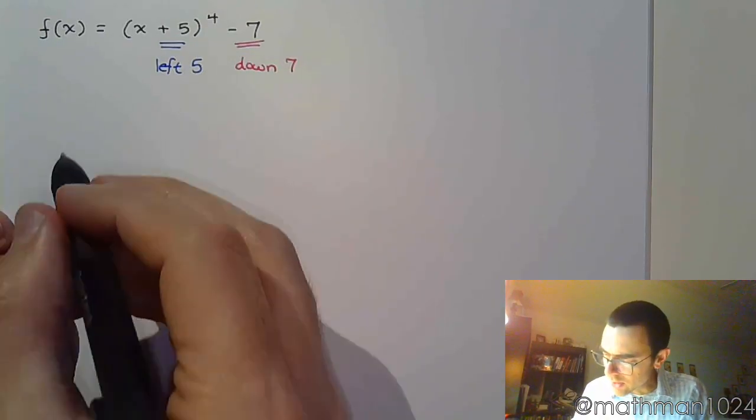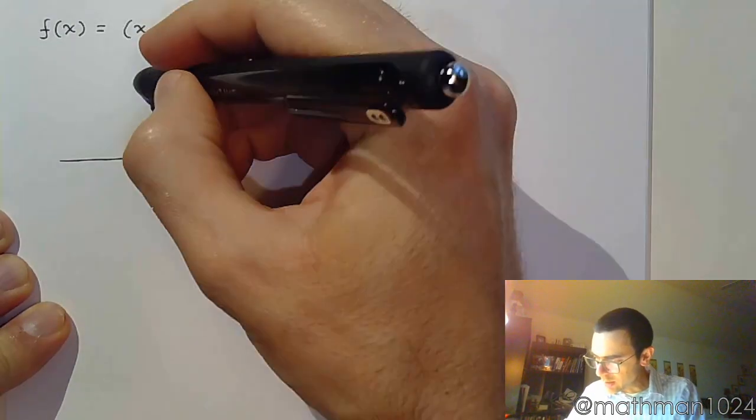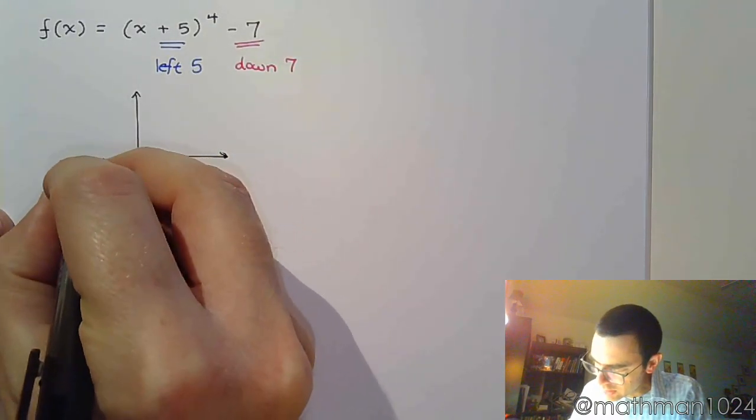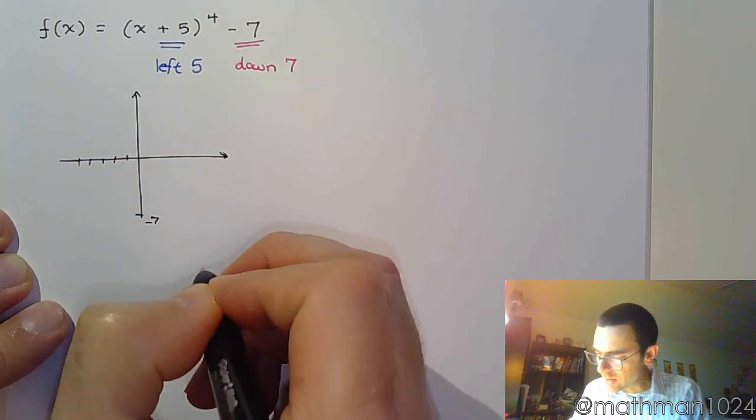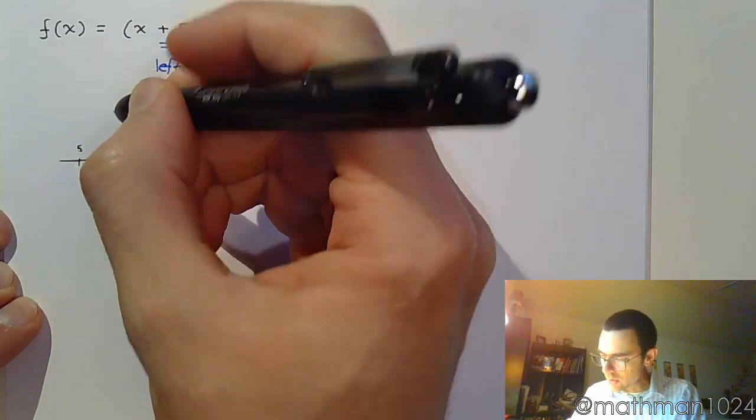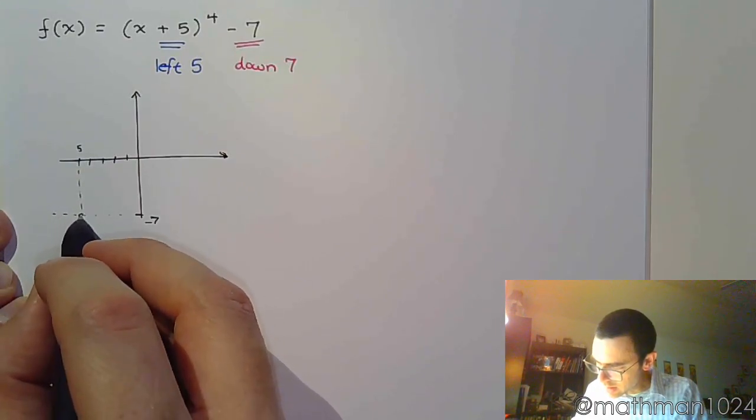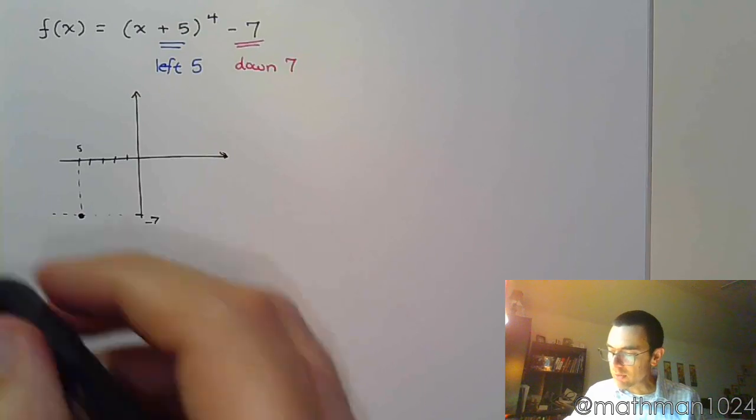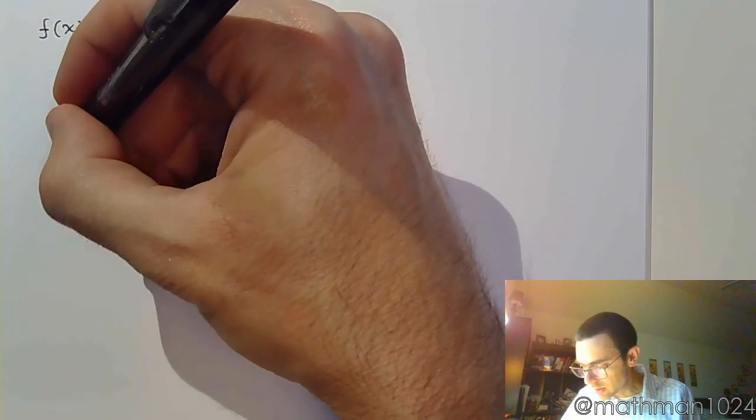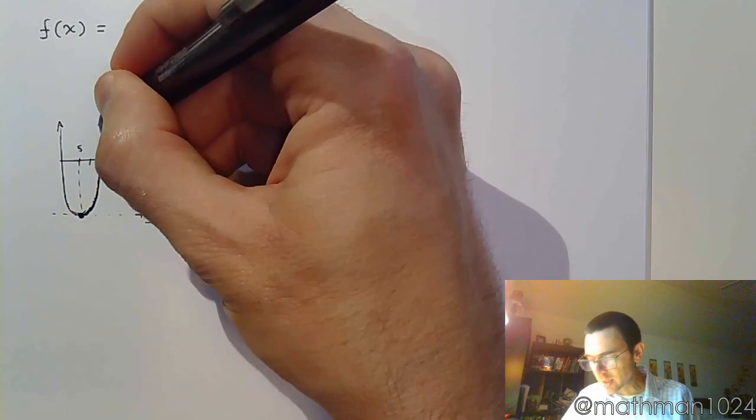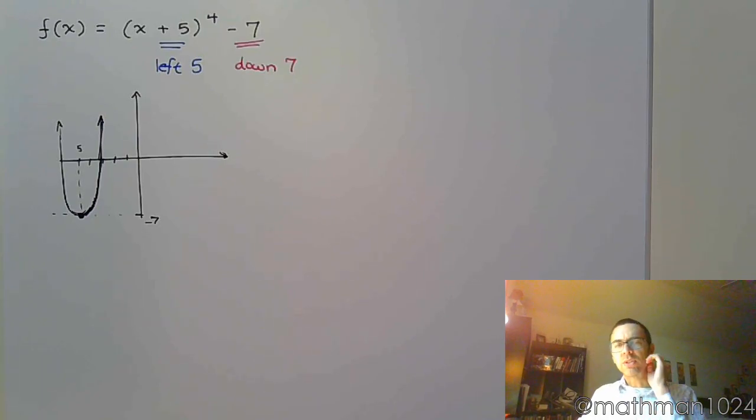So left five down seven. Let's draw a quick sketch of this just to get an idea about where we are and just kind of what we look like. That's going to be our vertex and we're going to have that U looking shape. So it's going to be something kind of like that. Give or take, right? Again, we're not going for accuracy here. We're just going for do you understand where it's supposed to be located, what the shape is, and what information can we get from this.